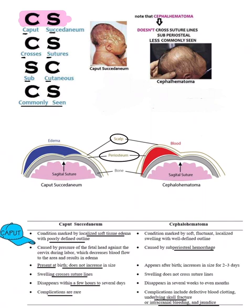Now talking about the difference and where the blood collects: in caput succedaneum, the blood is filling between the scalp and the periosteum. In cephalohematoma, the blood is collecting between the periosteum and the bone.